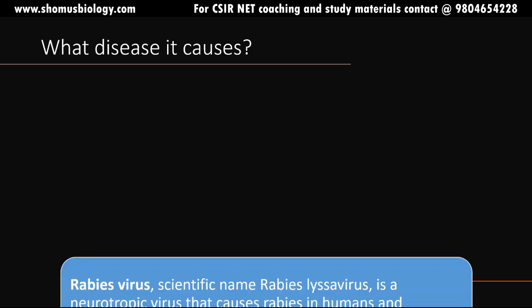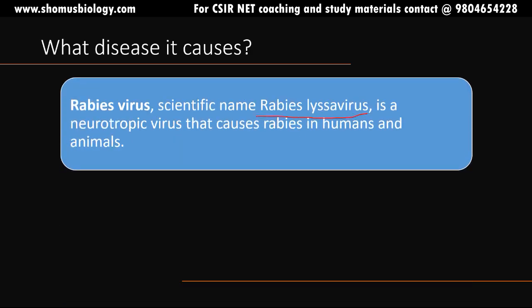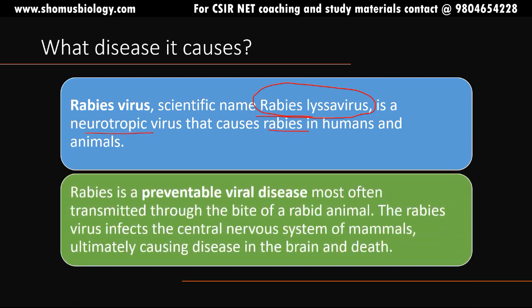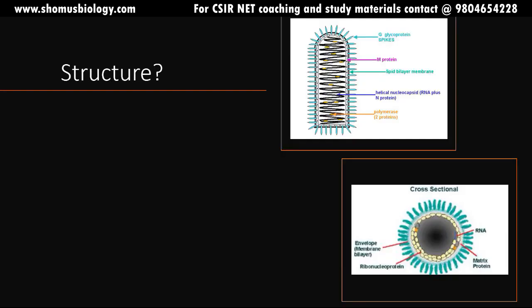The scientific name is rabies lyssavirus. It is a neurotropic virus that causes rabies in humans as well as other animals like dogs. Rabies is a preventable viral disease most often transmitted through the bite of a rabid animal — any animal infected with the rabies virus. The rabies virus infects the central nervous system of mammals, ultimately causing disease in the brain and death of the individual. If a stray dog bites you, definitely go through the whole vaccination process; otherwise it can kill you.